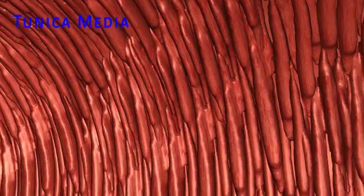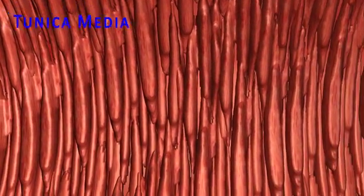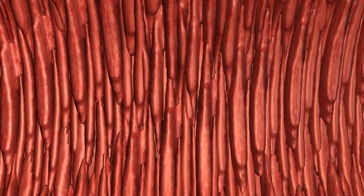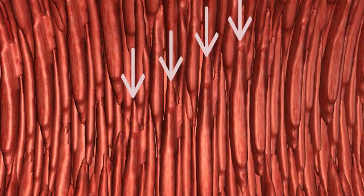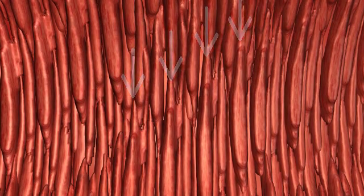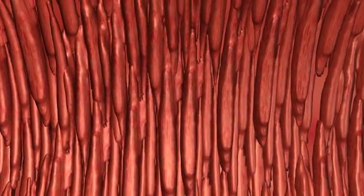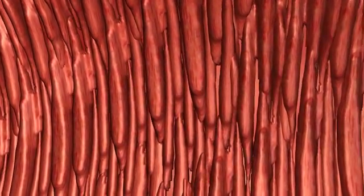The tunica media is composed of a layer of spindle-shaped smooth muscle cells. They are arranged in a helical fashion which makes the vessel more durable under high pressure. This layer provides the vessel with mechanical strength and contractile power which helps maintain blood pressure.